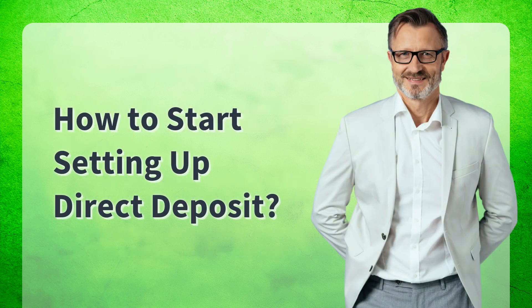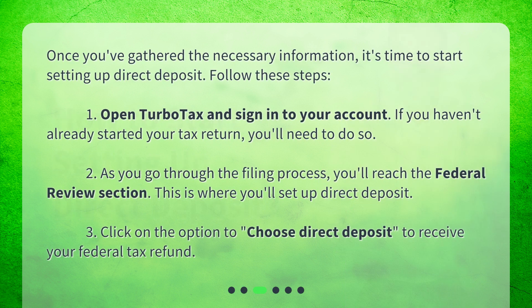How to start setting up direct deposit: Once you've gathered the necessary information, it's time to start setting up direct deposit. Follow these steps: 1. Open TurboTax and sign in to your account. If you haven't already started your tax return, you'll need to do so. 2. As you go through the filing process, you'll reach the federal review section — this is where you'll set up direct deposit. 3. Click on the option to choose direct deposit to receive your federal tax refund.